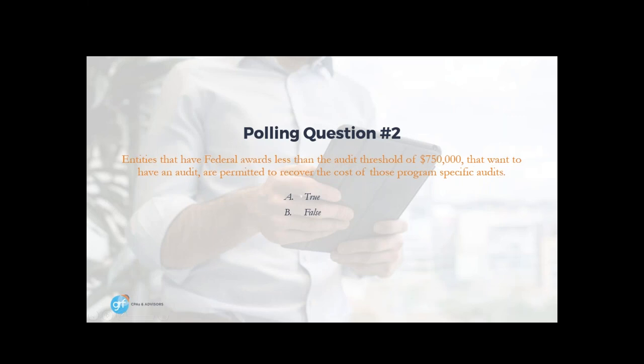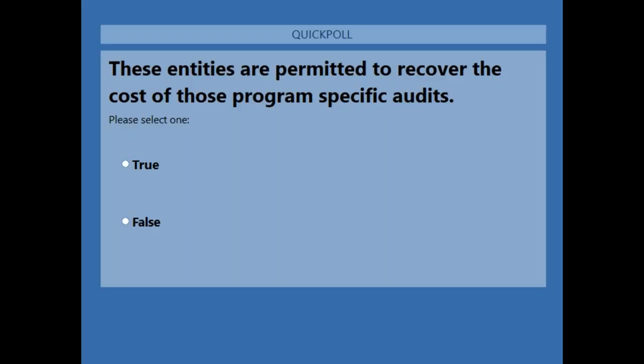We're now on our second polling question. The question is: entities that have federal awards less than the audit threshold of $750,000 that want to have an audit are permitted to recover the cost of those program-specific audits. Is it A for true or B for false? While everybody's recording their answers, our second CPE word is goods — G-O-O-D-S. Remember to jot these words down because you will need them for the survey following our webinar.